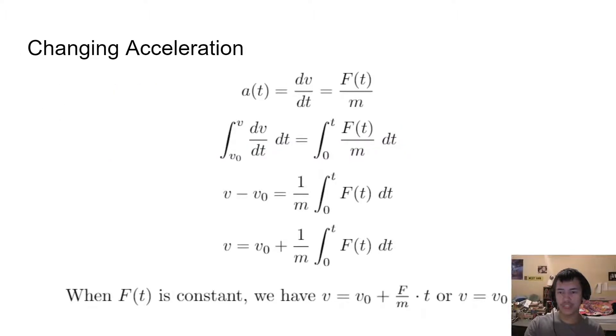Now, for changing acceleration, what we want to do is find an equation to find our velocity after a certain amount of time, given some force. The way we do this is we note that acceleration is just dV by dt, where V is velocity. But we also know acceleration is equal to force divided by mass.